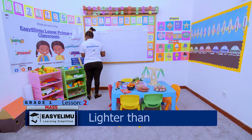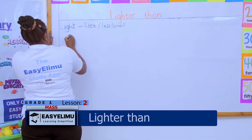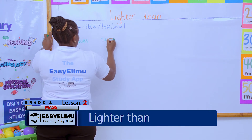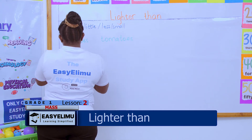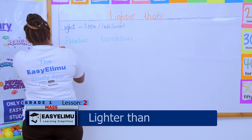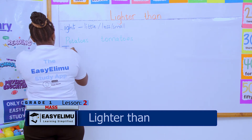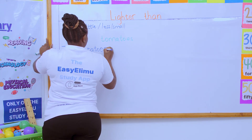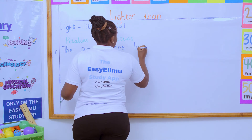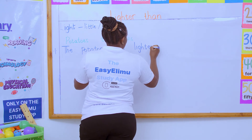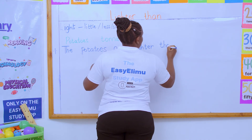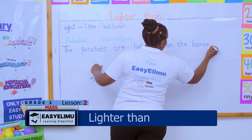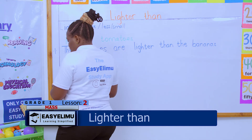So if I'm supposed to compare here — I write 'potatoes' and here I write 'tomatoes' — and I'm told to compare the mass of the two items. The potatoes are lighter than the bananas.